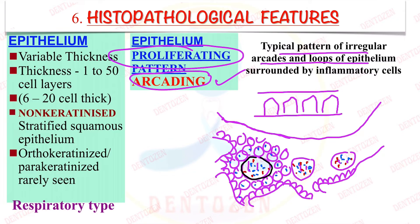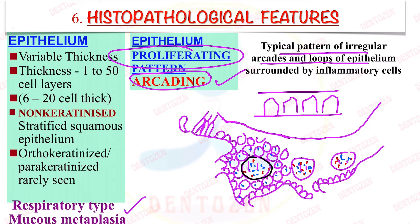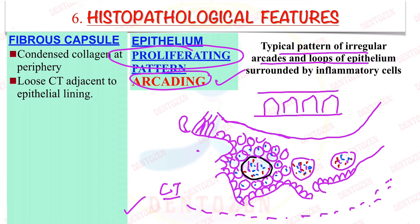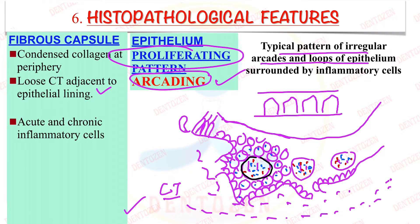Sometimes we can see changes in this epithelial lining: instead of stratified squamous epithelial lining, we can see respiratory type epithelium — pseudostratified ciliated columnar epithelial lining — which can happen when it is close to the maxillary sinus. Also, it can change to mucous cells, resulting in mucous metaplasia. Regarding the connective tissue, collagen fibers are densely arranged at the periphery of the cyst, whereas connective tissue close to the epithelium has loosely arranged fibers.